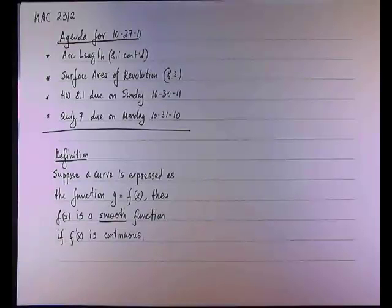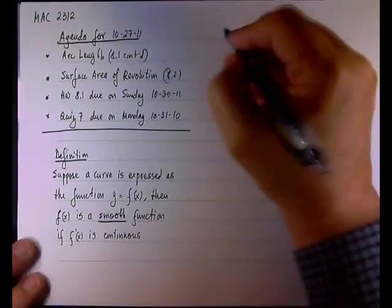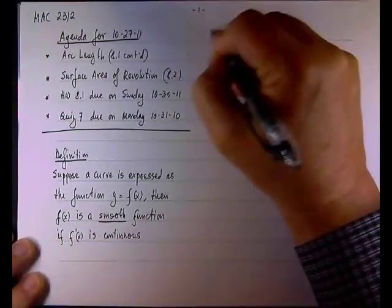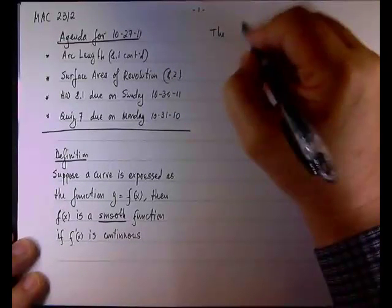Why do we need a smooth function? Because what we learned last time about calculating arc length is actually a theorem. One of the conditions that allows us to calculate the arc length is that the function whose curve we're measuring has to be smooth. There's no sudden change, the derivative doesn't go to infinity, and the derivative exists over the interval. Now let's write the arc length theorem.